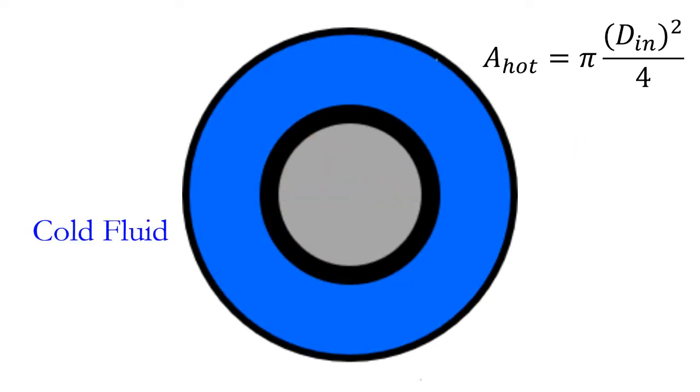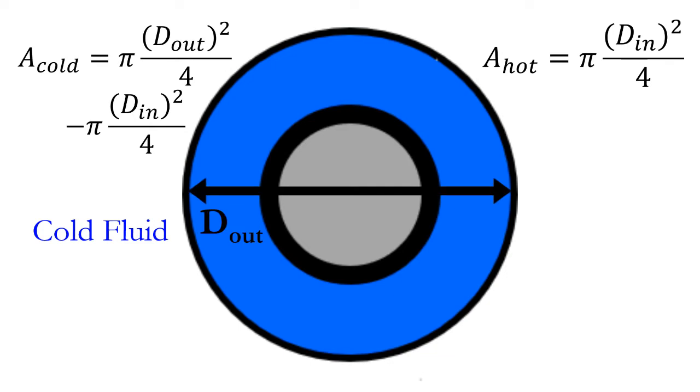The area for cold fluid flow is the cross-sectional area of the annular space in the outer pipe. To determine this area, we must subtract the circular cross-sectional area of the inner pipe from the circular cross-sectional area of the outer pipe, using the inner diameter from the large pipe and the outside diameter of the small pipe in our formula. Remember that the inner diameter of the annulus is different than the inner diameter of the middle pipe.